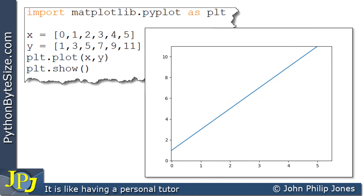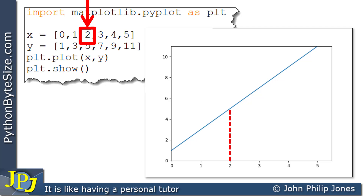Let's consider some of the x and y coordinates. I'm going to choose a random x coordinate — the value 2 — and that 2 will appear on the graph as shown by this dotted line.